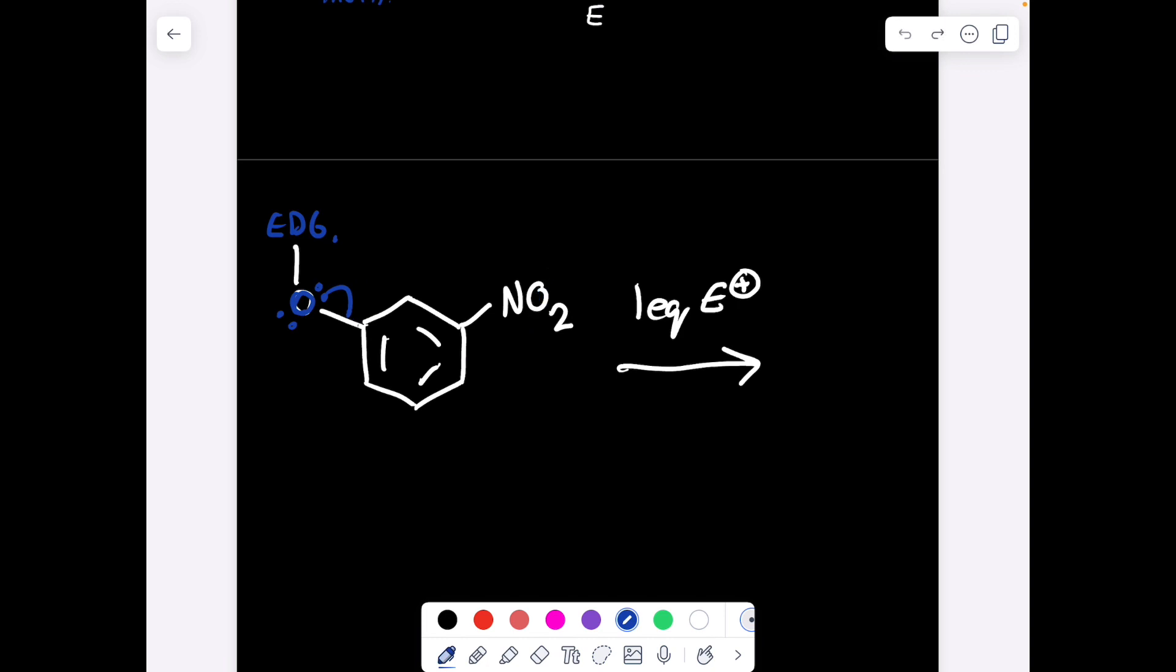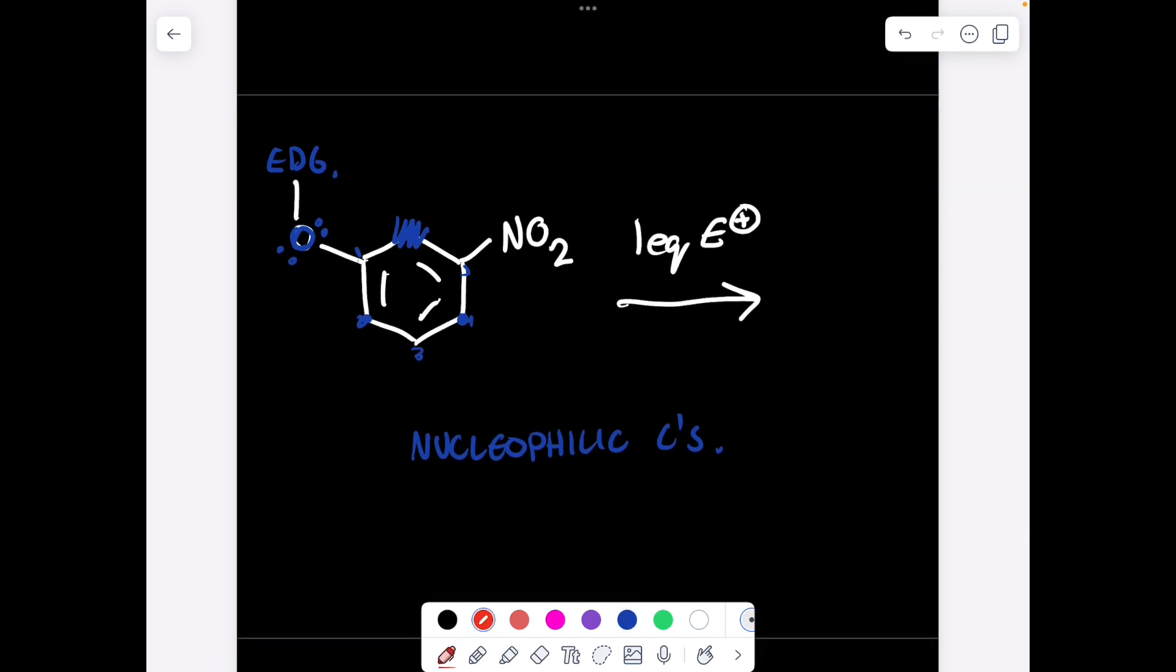So find the meta and the ortho and the para positions with respect to each group. So here we have, if we label this one, two, three, four, five, six. Carbons number two, six, and four are going to be nucleophilic. Carbon six has a lot of steric hindrance, so it's probably not going to add there, so it's either going to two or four.